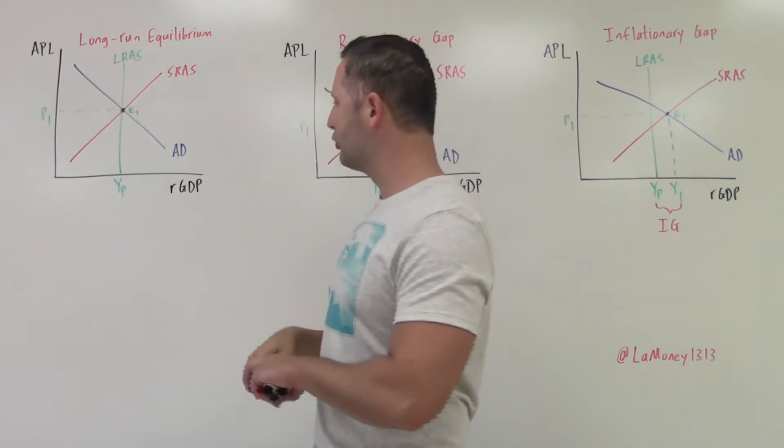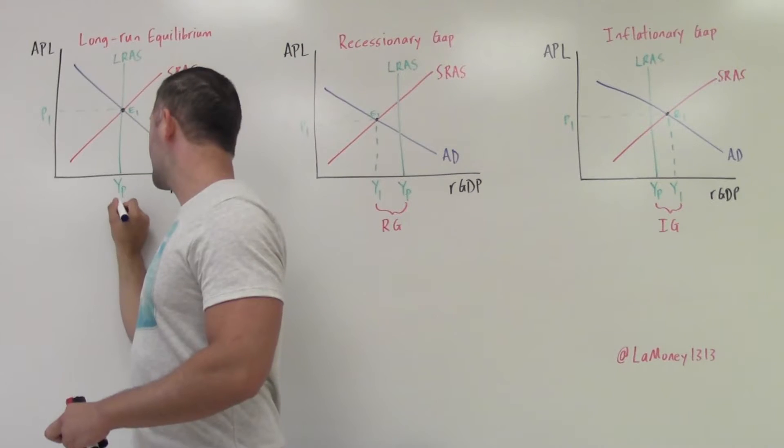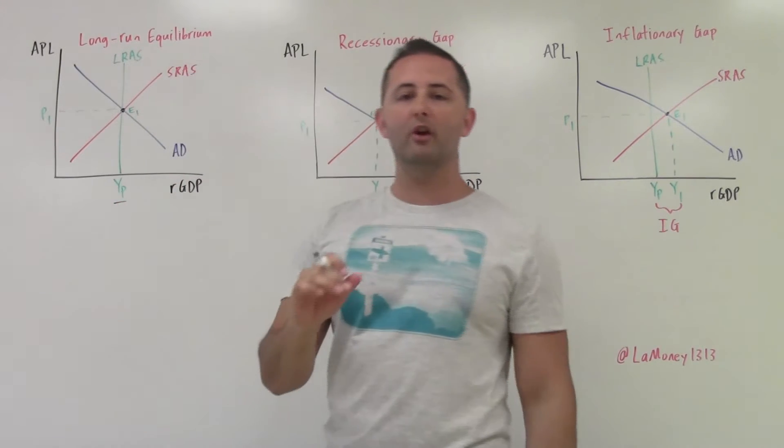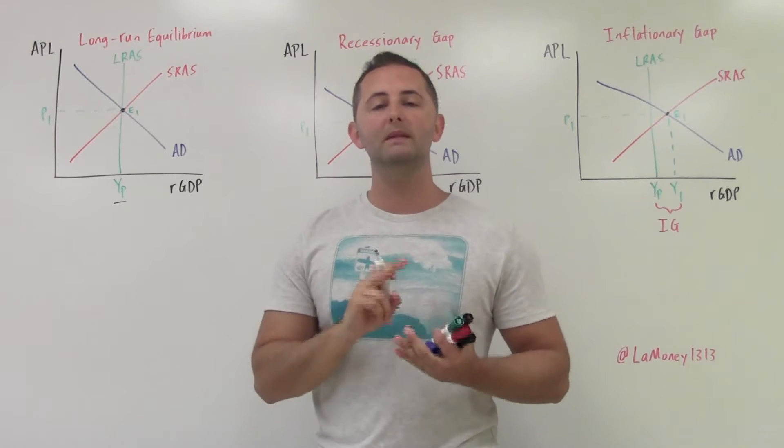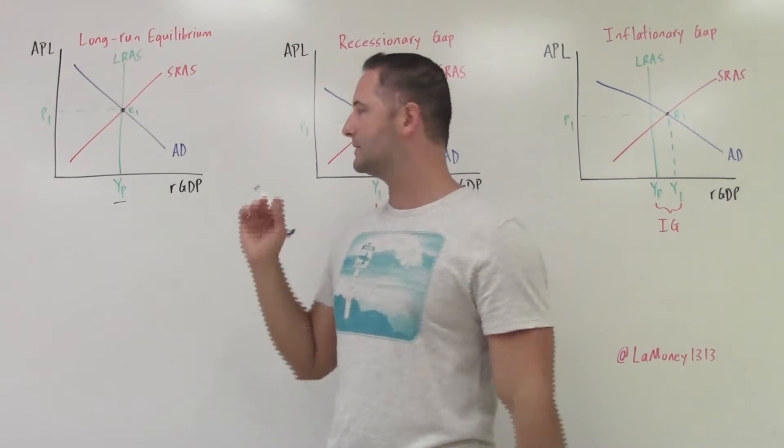We see that this YP, hopefully you remember from previous videos, that YP, remember Y, that variable means three things. It means real GDP, it means income, and it means output. Those three things are all the same, synonymous.